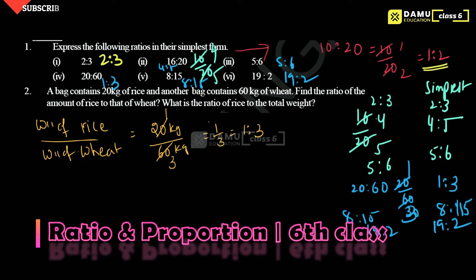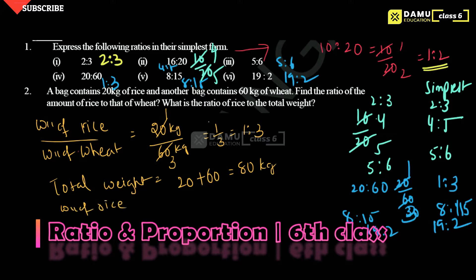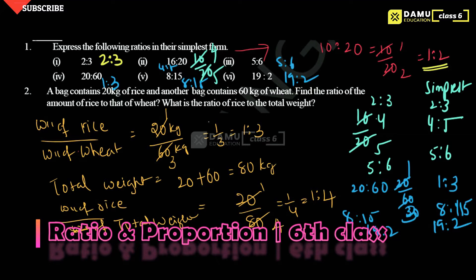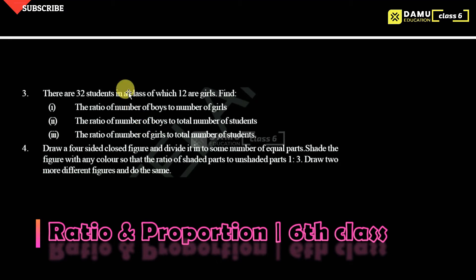Next, what is the ratio of rice to the total weight? Total weight equals 20 plus 60, which is 80 kg. So weight of rice to total weight is 20 by 80 — 20 ones are 20, 20 fours are 80 — that gives 1 by 4, so the answer is 1:4.